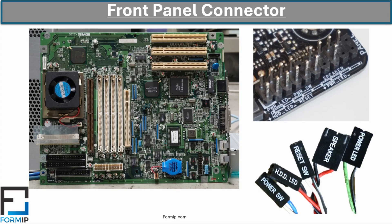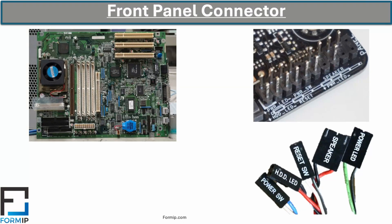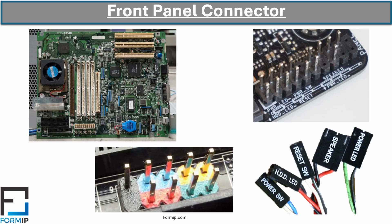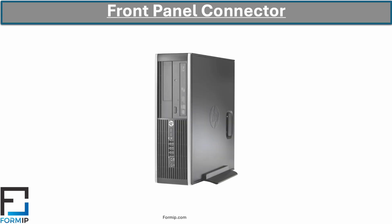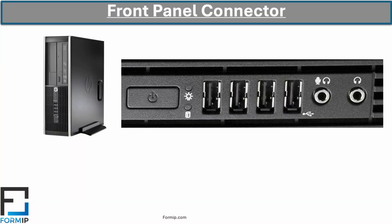Typically, the front panel connector is color-coded to help you more easily identify where the wires connect. This type of connector allows easy access to these functions directly on the computer case, avoiding the need to fiddle with the PC to, for example, turn it off. It includes some USB ports, audio ports — one for headphones or speakers and another for a microphone — a power button used to turn the computer on or off, a reset button used to perform a hard reboot, and a hard drive activity light that flashes when there is activity, meaning the hard drive is being used.